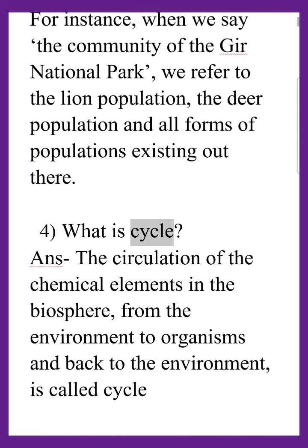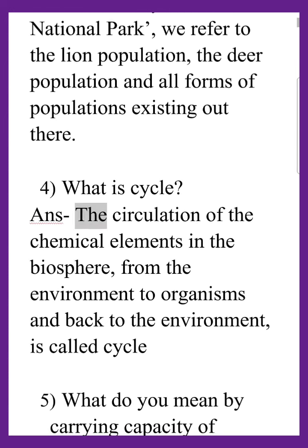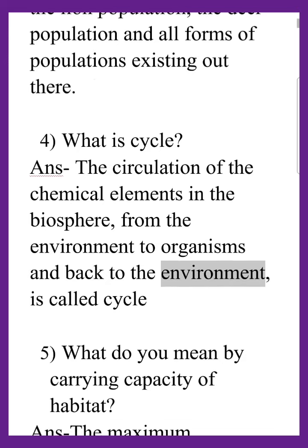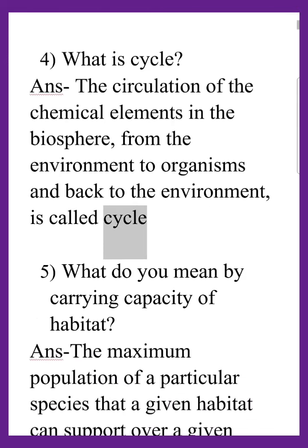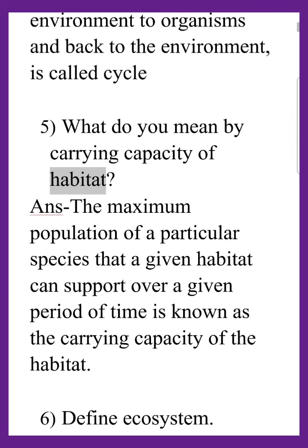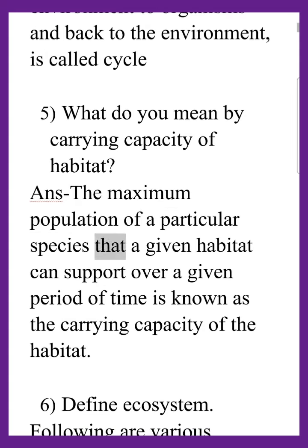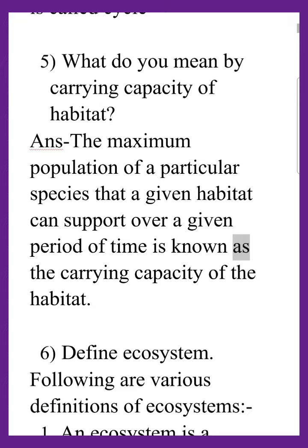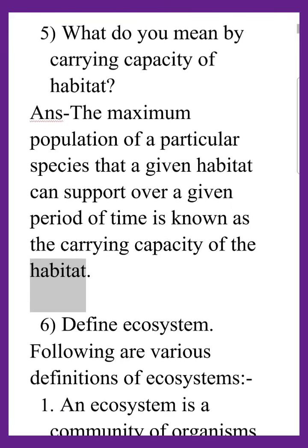What is a cycle? The circulation of the chemical elements in the biosphere, from the environment to organisms and back to the environment, is called a cycle. The maximum population of a particular species that a given habitat can support over a given period of time is known as the carrying capacity of the habitat.